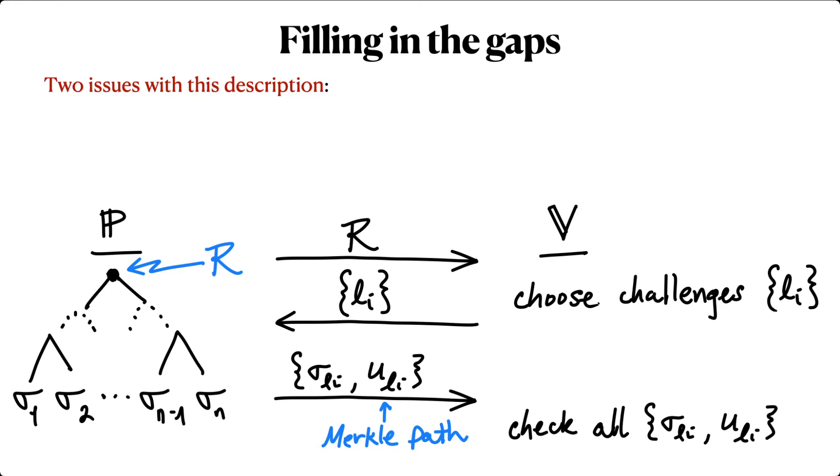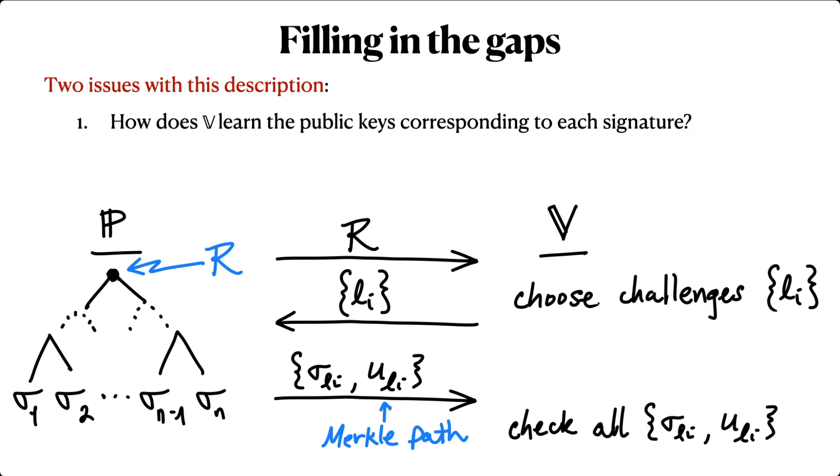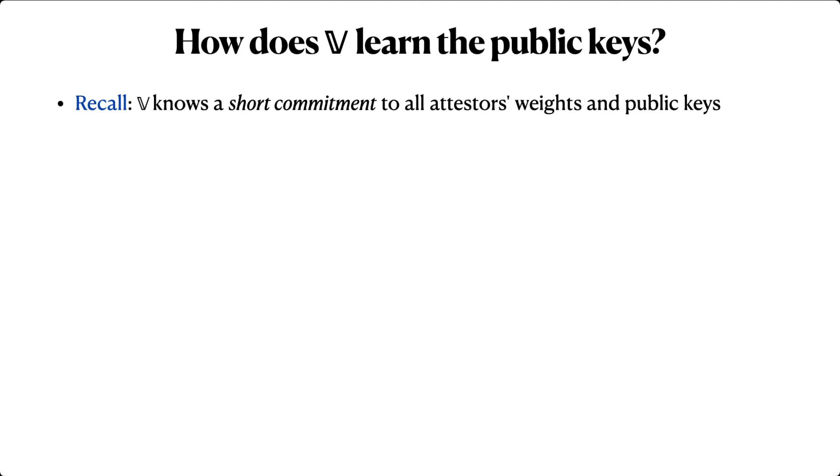This description glosses over two important details. First, how does the verifier learn the public keys corresponding to each signature? And second, how can the verifier efficiently sample the challenge leaves it requests from the prover? I'll answer each of these in turn.